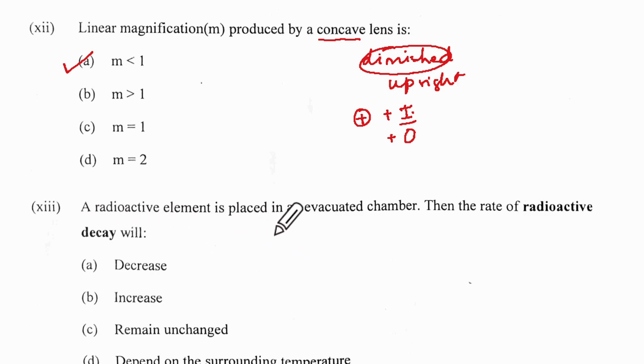13th one: the radioactive element is placed in an evacuated chamber. The rate of radioactive decay will... What is an evacuated chamber? The air has been withdrawn so the air pressure inside is going to be less.